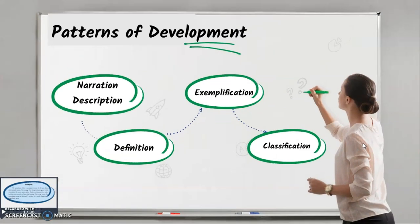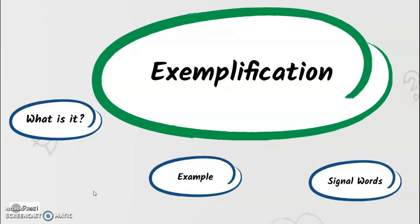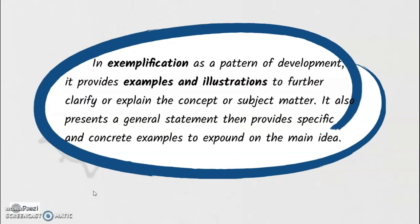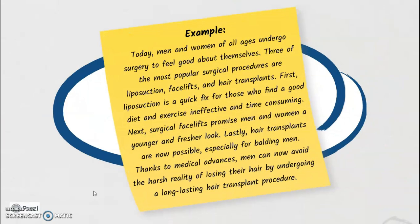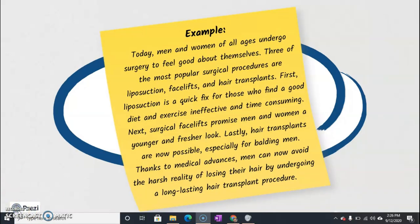Now let's move on to another pattern of development which is exemplification. It provides examples and illustrations to further clarify or explain the concept or subject matter. It also presents a general statement that provides specific and concrete examples to expound on the main idea. In this pattern, it shows, proves, or explains a general idea or point by using examples. In the given example, the paragraph expounds on the main idea stated in the first sentence through specific examples — the surgical procedures and their purpose — which support the main idea.